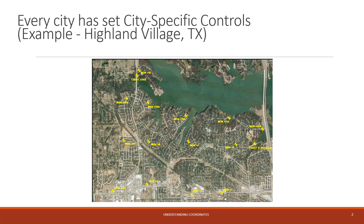Every city has their own set of control points — city-specific control points. In this example, I have a picture of Highland Village, Texas, and certain control points set throughout their city. They're set in different locations, and they're basically monuments set throughout the city.